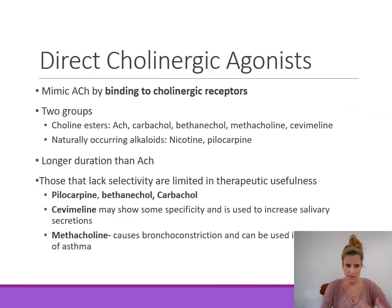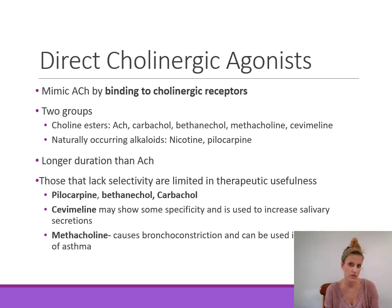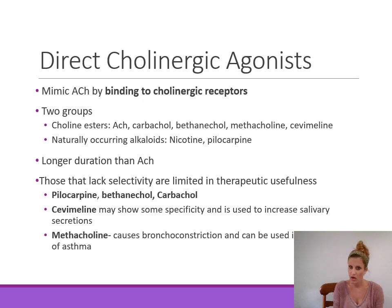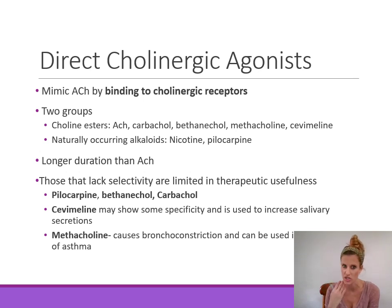Direct cholinergic agonists mimic the action of acetylcholine by binding to cholinergic receptors. They can be broken into two groups: choline esters and naturally occurring alkaloids. The naturally occurring alkaloids include nicotine and pilocarpine. The choline esters include acetylcholine itself, carbachol, bethanechol, methacholine, and cevimeline. The others tend to have a longer duration than acetylcholine, since acetylcholine is broken down rapidly by acetylcholinesterase. However, the majority lack selectivity and bind to receptors indiscriminately.